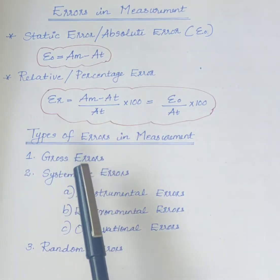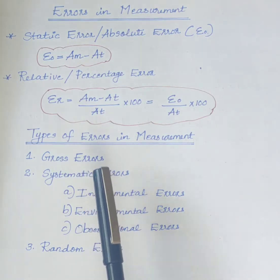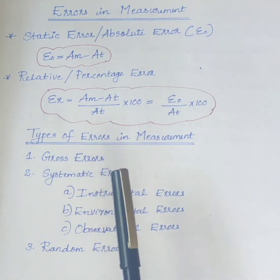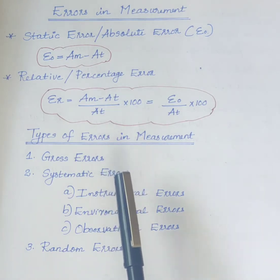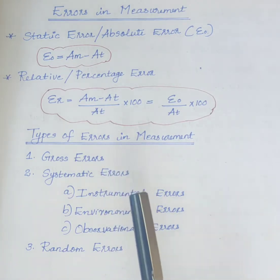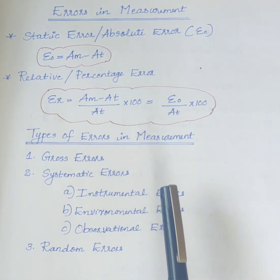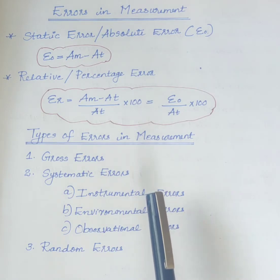First we will discuss gross error. These are basically human errors caused by the operator using the instrument, recording and calculating measurement results. The instrument may be good or may not give any error, but still the measurement may go wrong due to the operator.